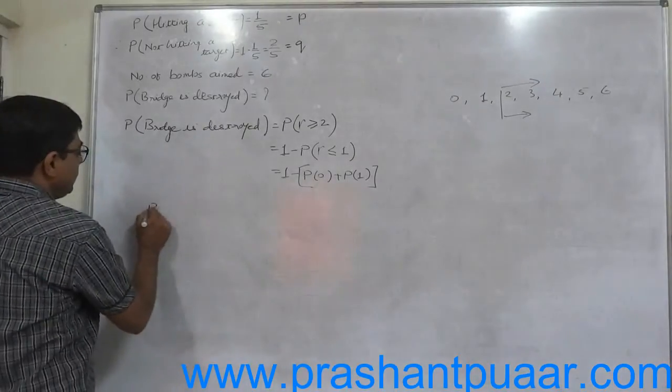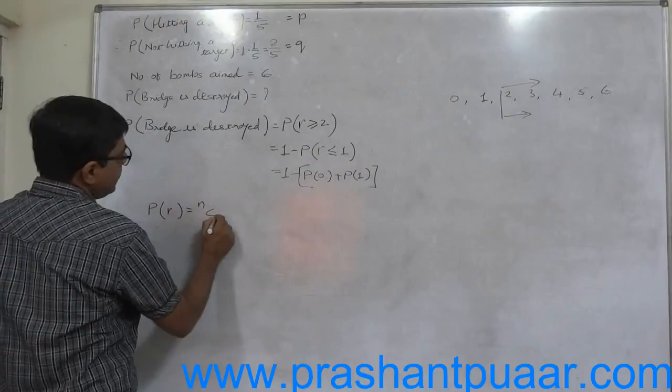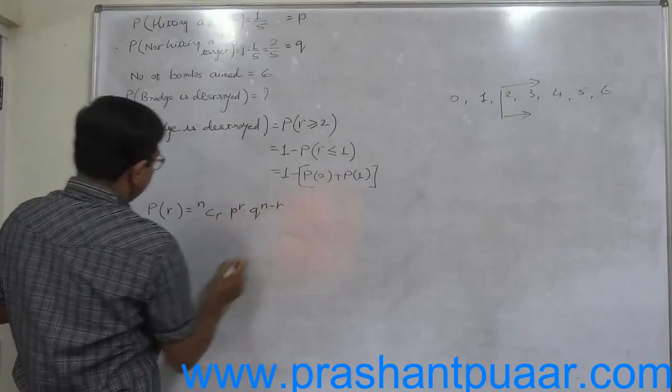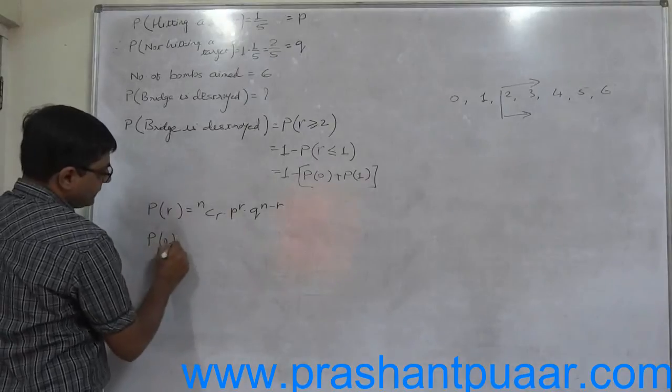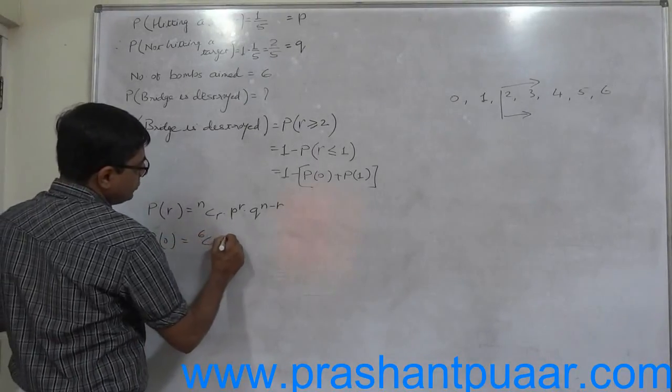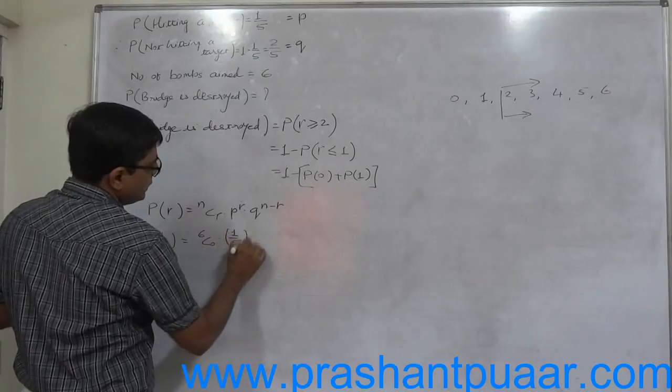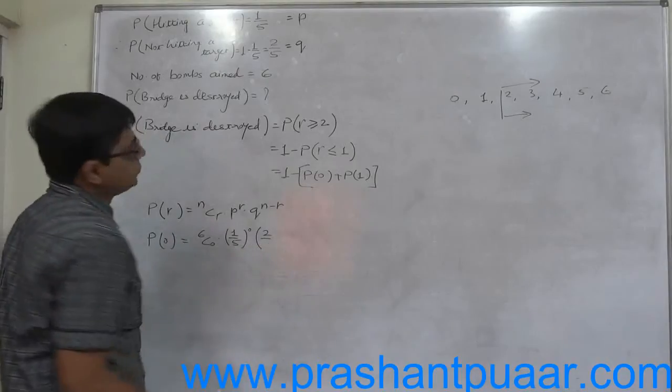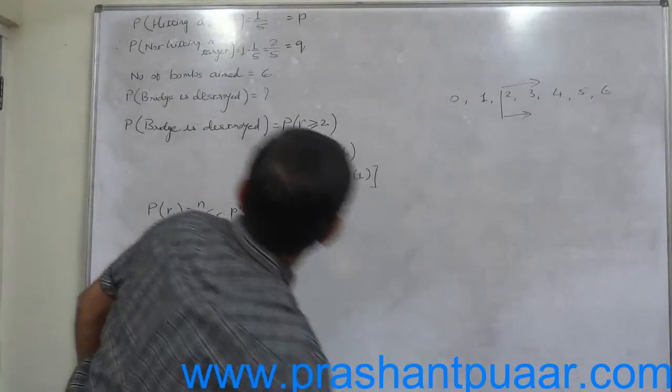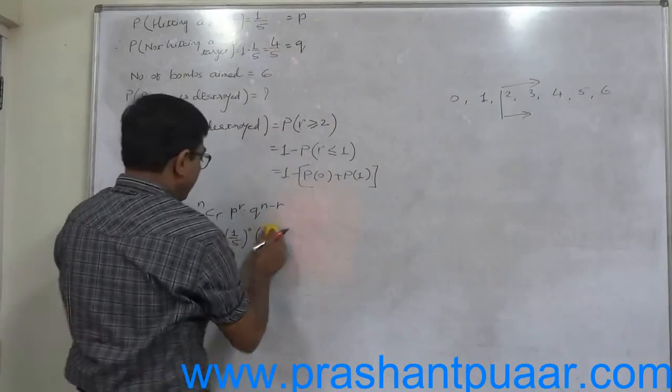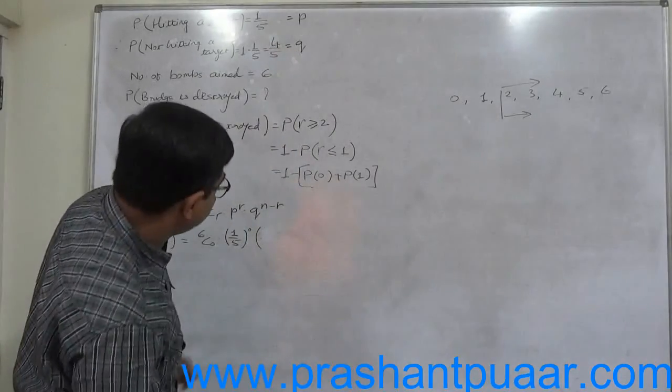So now first of all P of 0. P of R equals to NCR into P raise to R into Q raise to N minus R. First P of no success or 0 is 6C0 into 1 by 5 raise to 0 into 2 by 5, not 2 by 5, it must be 4 by 5. 4 by 5 raise to 6 minus 0 means 6.